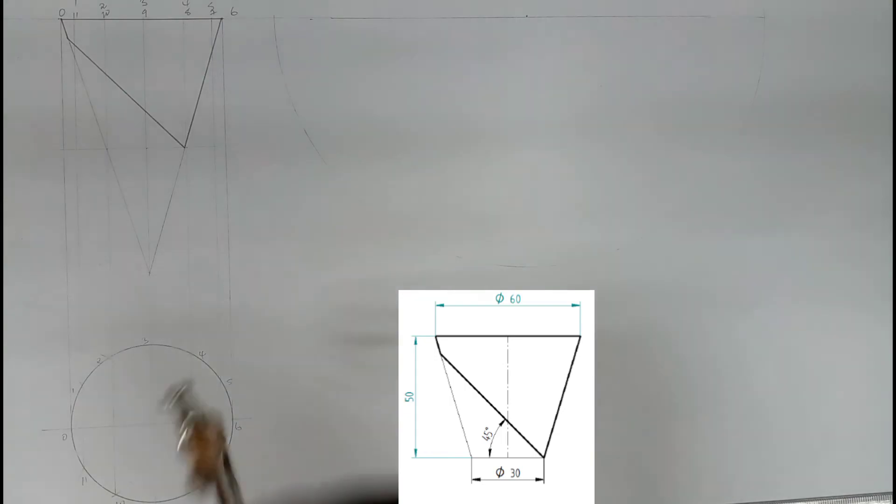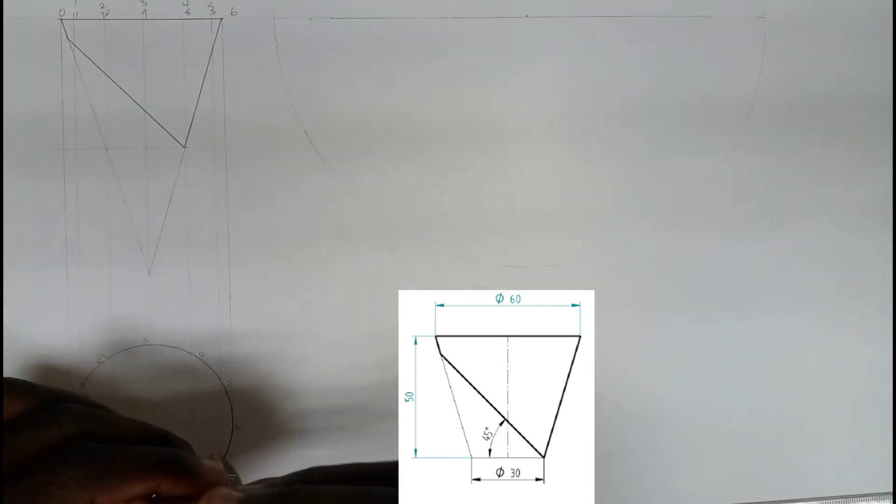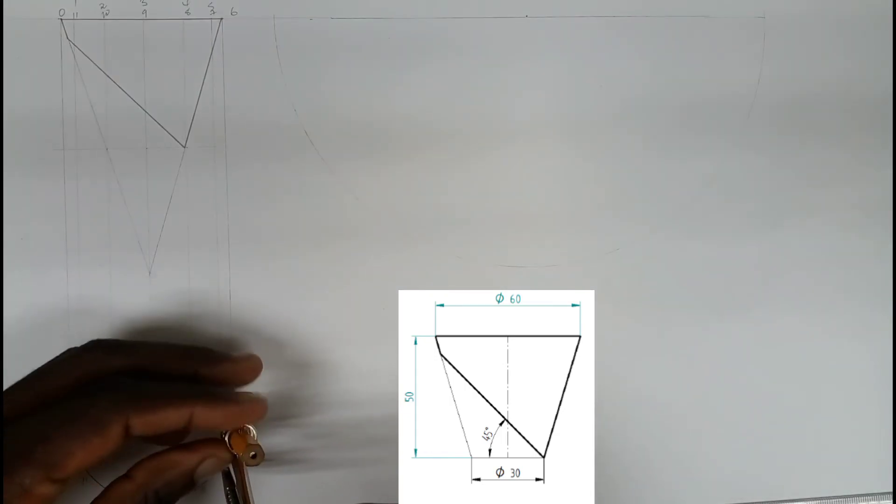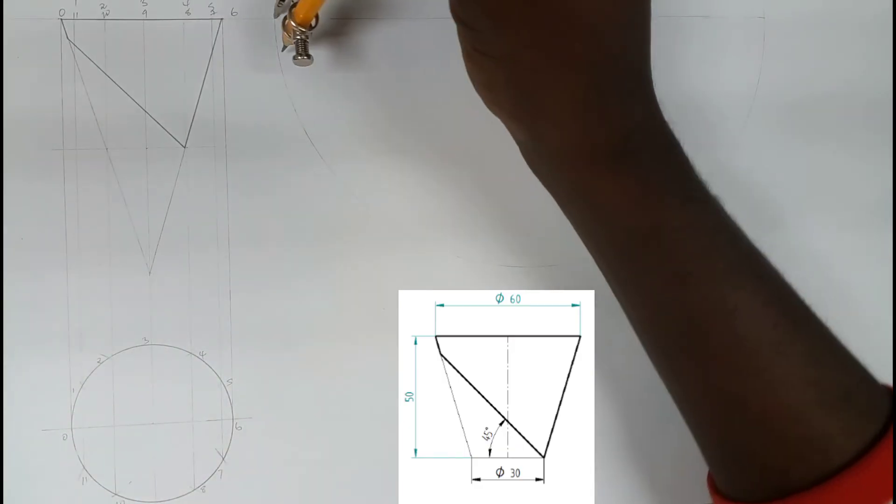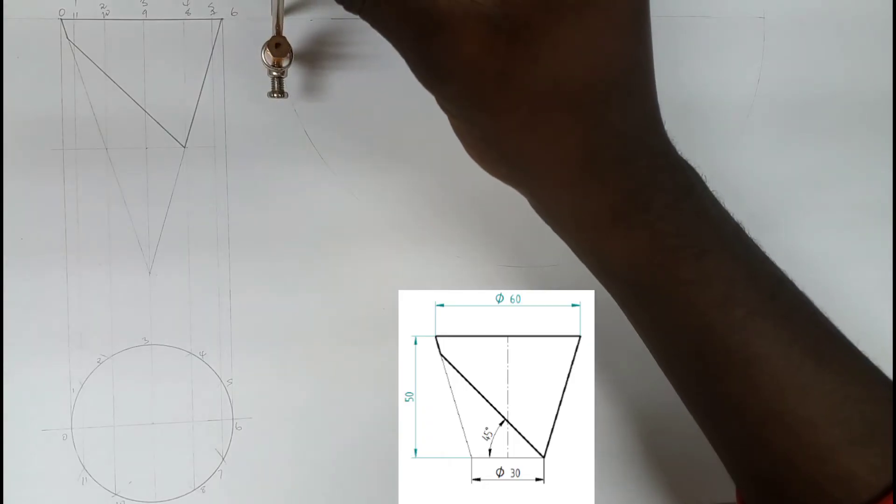After doing that, you measure the distance from here to here, go to this point to strike an arc.